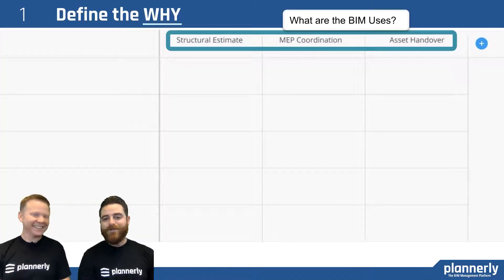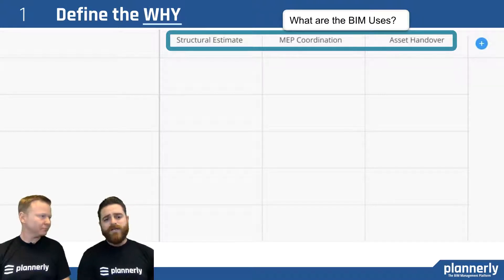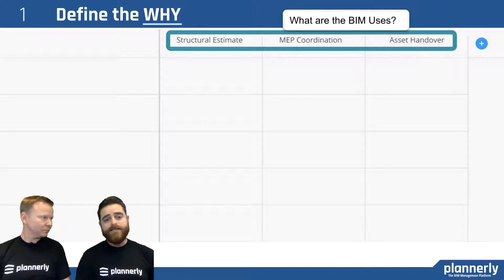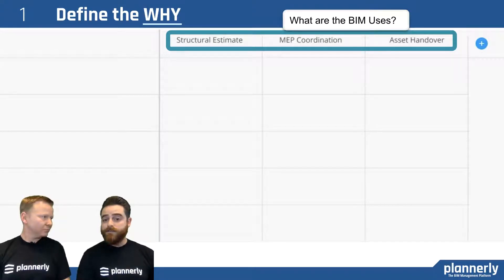The first thing we want to do on any scope is define the why. As we mentioned earlier, we want to define the BIM uses. What's the purpose? Why are we going to use BIM in the first place? If we have a complex design in this building, we might want MEP coordination to make sure we find enough constructability issues before we get on site.